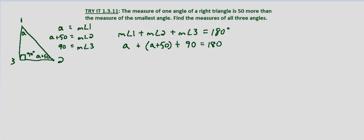So we combine like terms, and we get A plus A is 2A. 50 plus 90 is 140, and then we subtract 140 from both sides. We're left with 2A equals 40. Divide both sides by 2, and we get A equals 20.